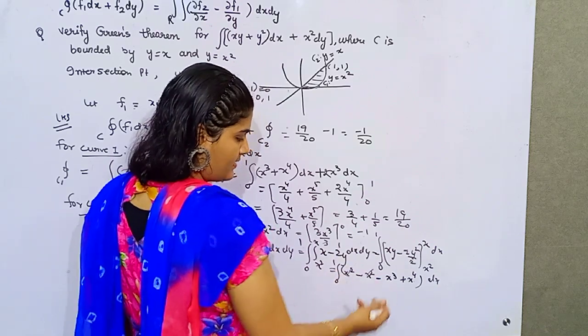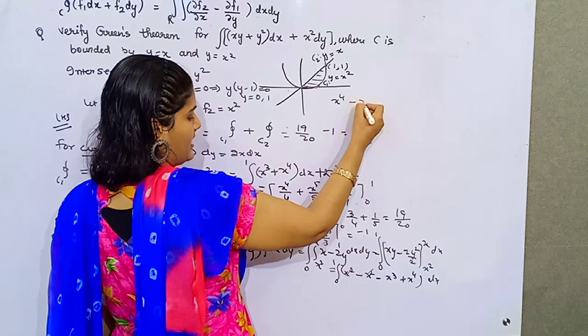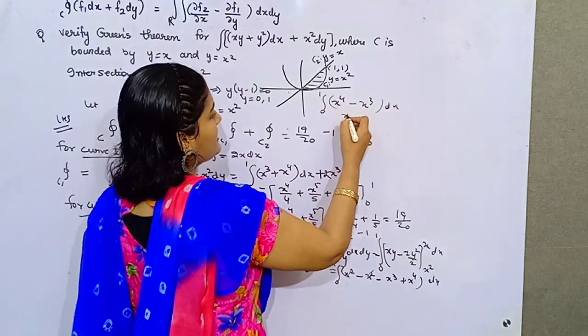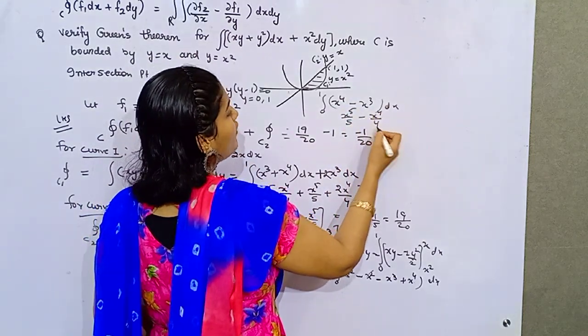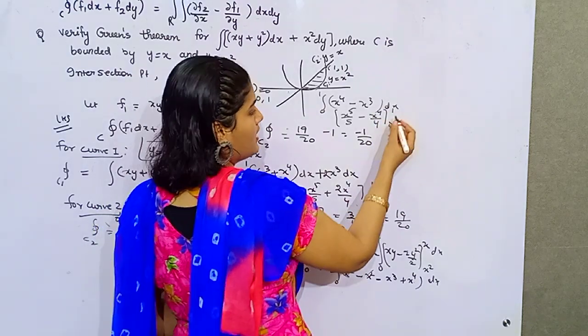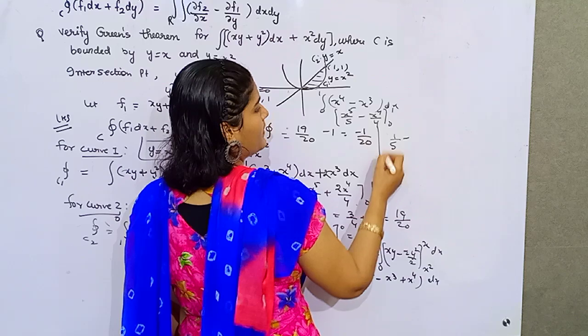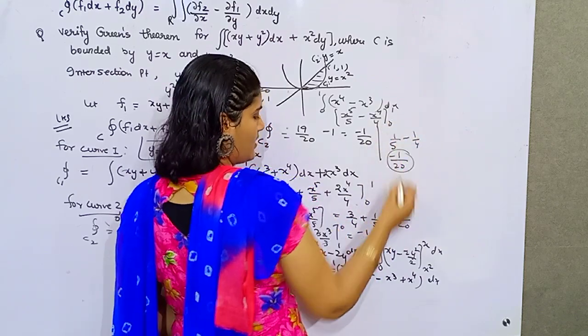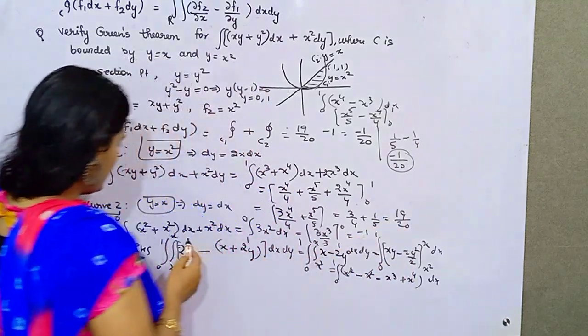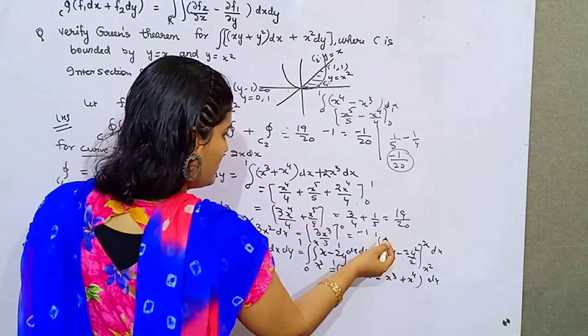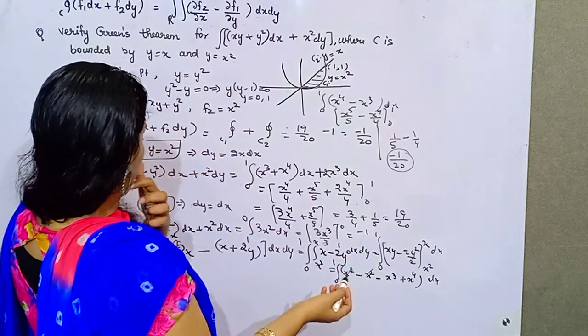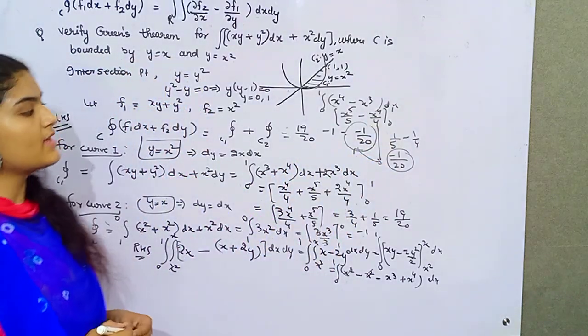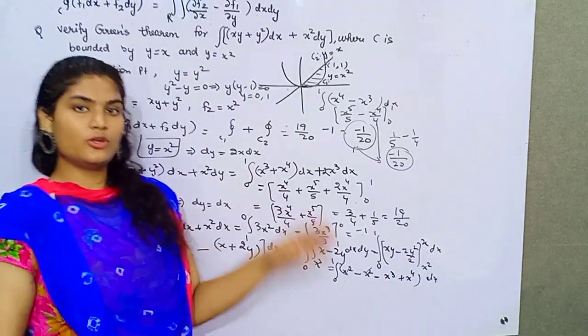Now with respect to x, this is cancelled, so what is left is x raised to power 4 minus x cubed, 0 to 1 dx. This is x raised to power 5 by 5 minus x raised to power 4 by 4, limit 0 to 1. On putting 1: 1 by 5 minus 1 by 4, which is 4 minus 5, minus 1 by 20. You can see both of these answers, on adding, are equal. So that means Green's theorem is verified.